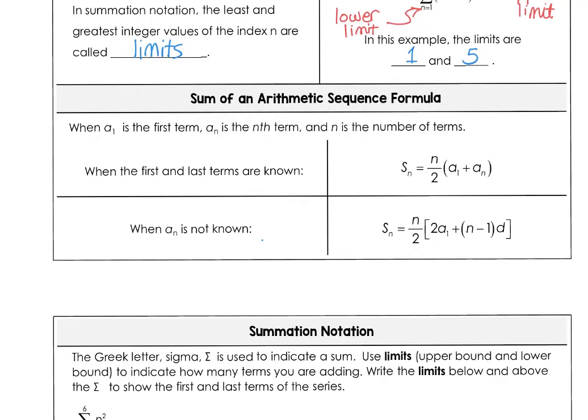Here at the bottom, you can see the sum of an arithmetic sequence formula. When the first and the last terms are known, we're going to use this formula. And when a sub n is not known, then we'll use this formula.